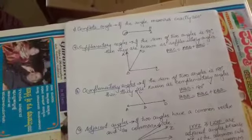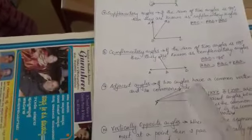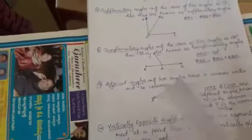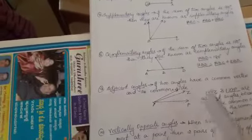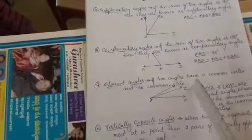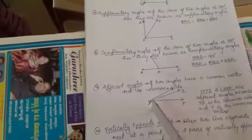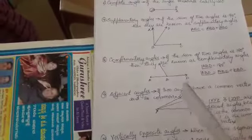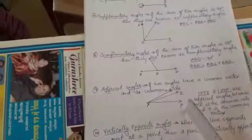The next type of angles are adjacent angles. That is if two angles have a common side and a common vertex. For example, in angle XYP, YZ is the common arm between angle XYZ and angle ZYP, and Y is the common vertex. So these two angles XYZ and ZYP are called adjacent angles.